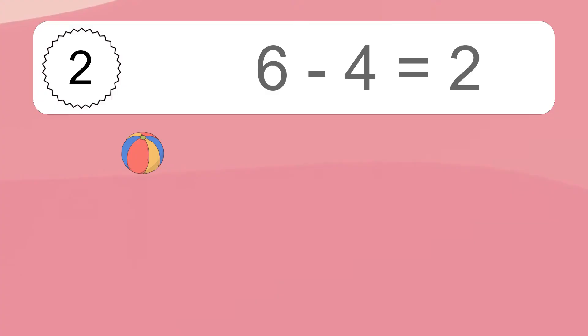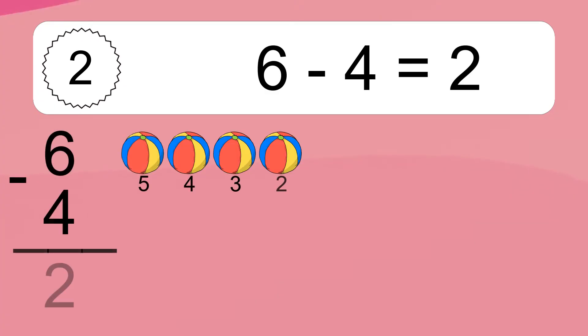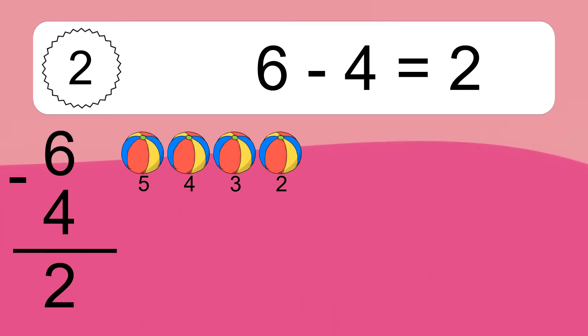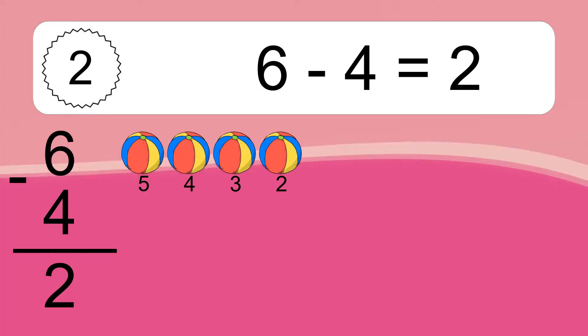6 minus 4 equals what? 6 minus 4 equals 2. Let's count it. 5, 4, 3, 2.